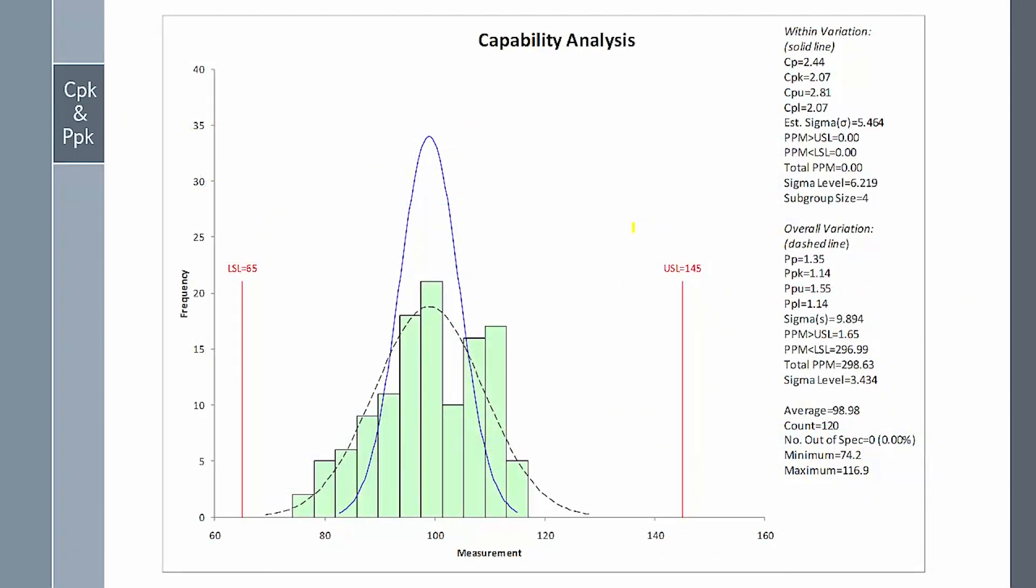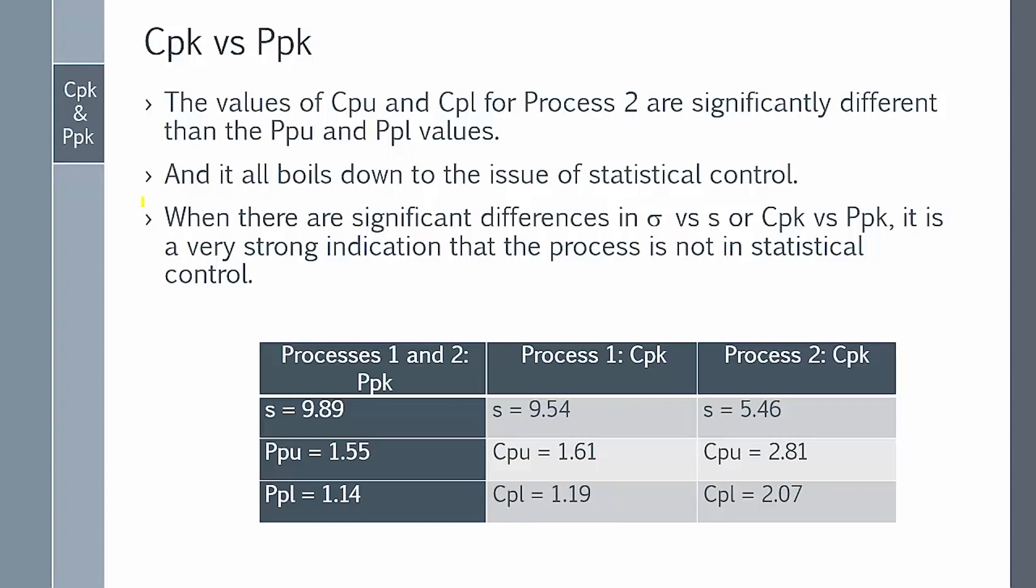So now what's the process capability analysis going to look like? Well, you can see it here. And what you'll see now is that the PPK value is the same as before, 1.14. Standard deviation is the same, 9.9. It's because we use the same data. It's just arranged differently, but the average and calculated standard deviation are the same regardless of how the data is arranged. What really changes is when you look at CPK. It's 2.07. And our estimated standard deviation is 5.5, significantly different than these two. All because your process is out of control. So the values of CPU and CPL are significantly different for process 2, and it all boils down to that issue of statistical control.